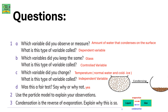Condensation activities involve three types of variables. The first is the independent variable — this is the variable you change in the experiment. The second is the dependent variable — this is the variable you measure or observe. The third is the controlled variable — this is the variable you keep constant to ensure a fair test. Which variable did you observe or measure? It was the amount of water that condenses on the surface — this is the dependent variable. Which variables did you keep the same? The glass — this is the controlled variable.